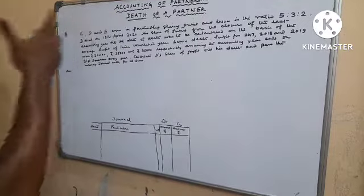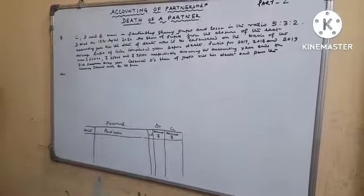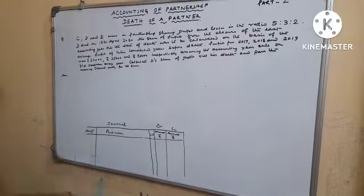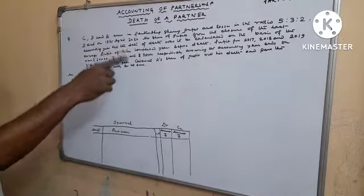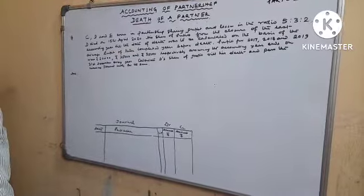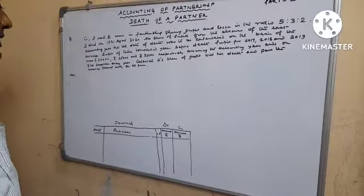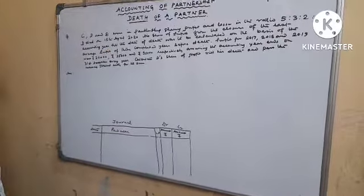His share of profit from the closure of the last accounting year till the date of death was to be calculated on the basis of average profit of 3 completed years.